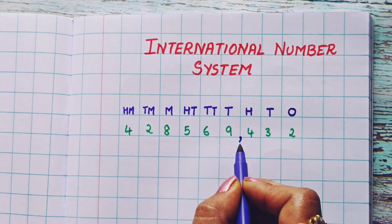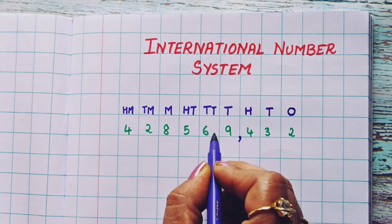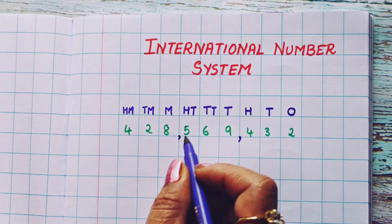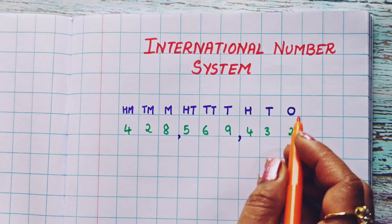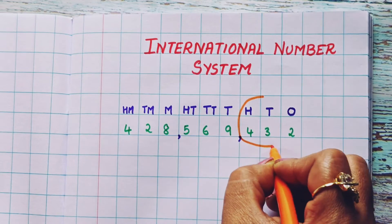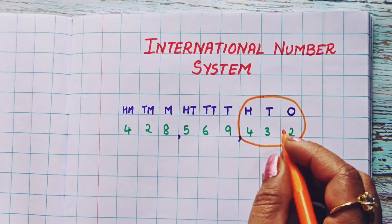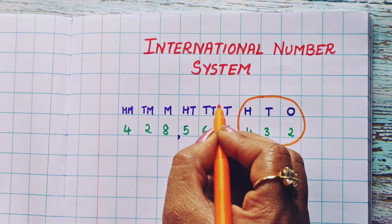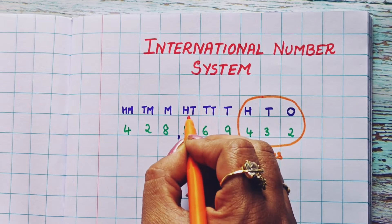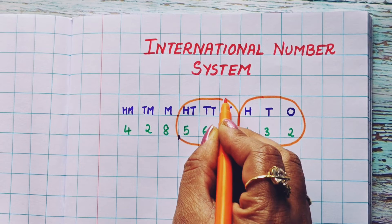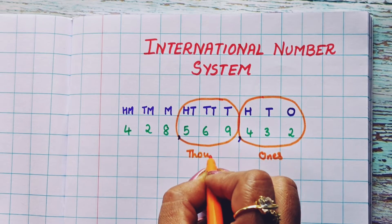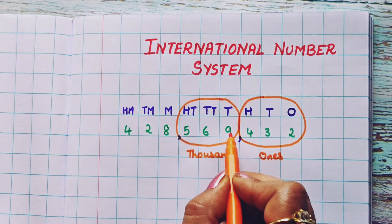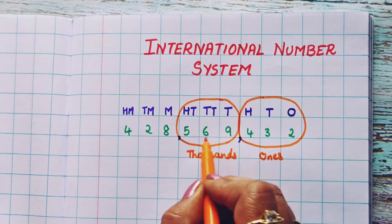So after the hundreds place I have given one comma. Then thousands, ten thousands, and hundred thousands — here I give the next comma. Now let's do the grouping. This whole thing comes under one group — the ones group. Then thousands, ten thousands, and hundred thousands all come under one group — this is the thousands group.